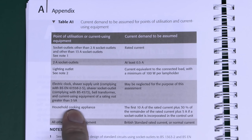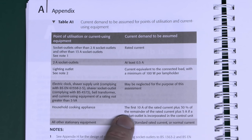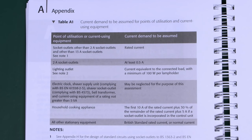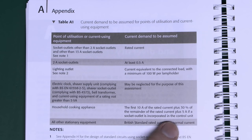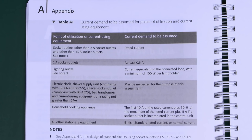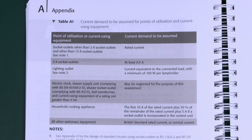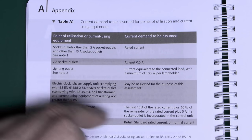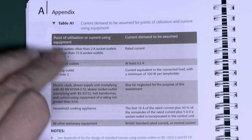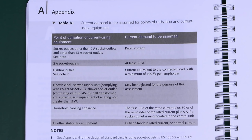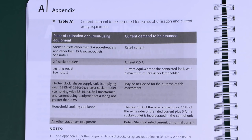For a cooking appliance — a freestanding cooker, or separate hob and oven — there's a specific formula: the first 10A, plus 30% of the remainder, plus an additional 5A if a socket outlet is included in the control unit. Everything else is either the rated current or normal current.